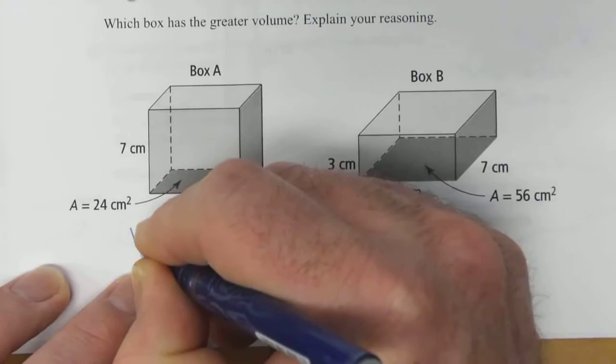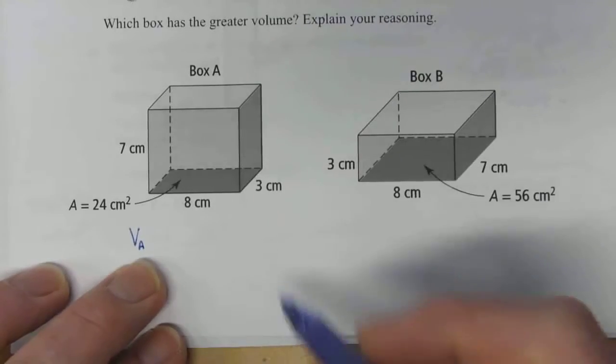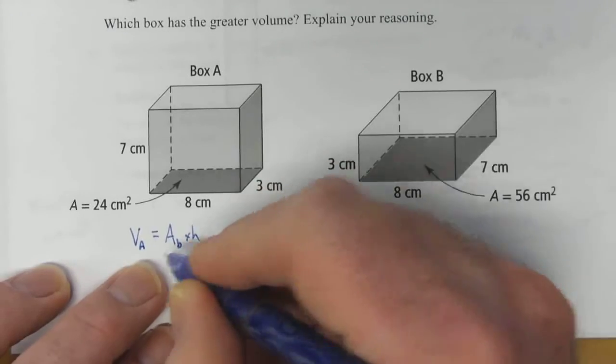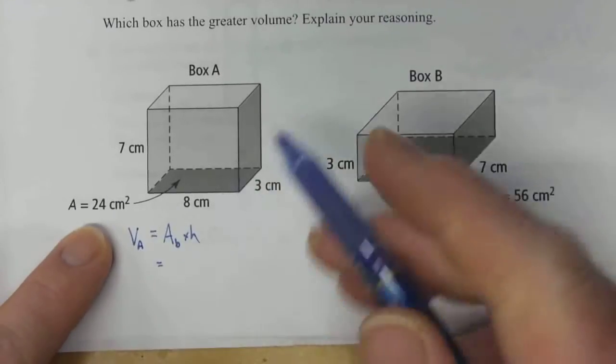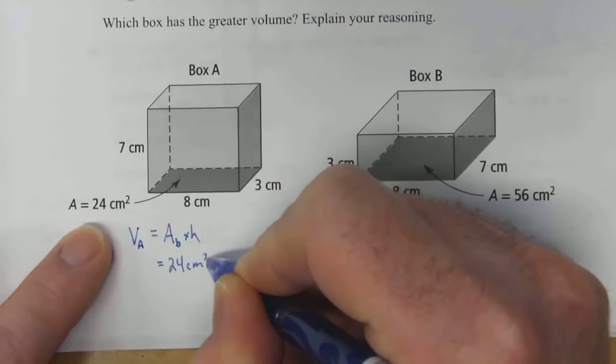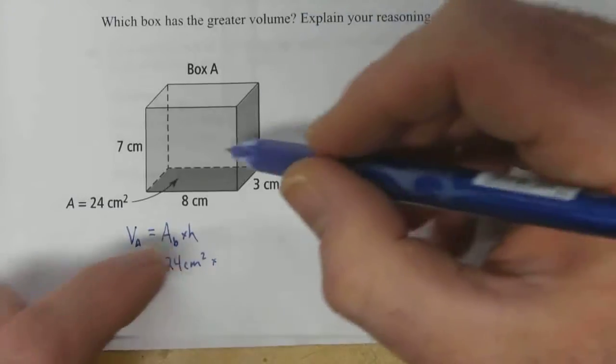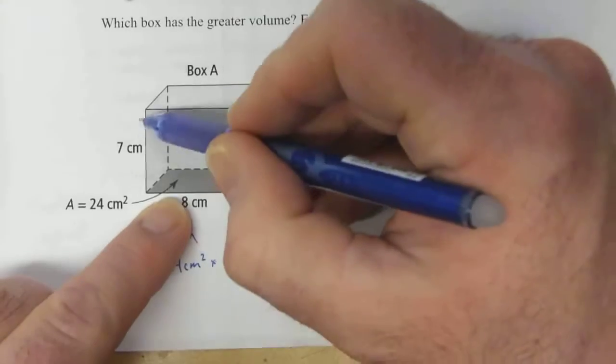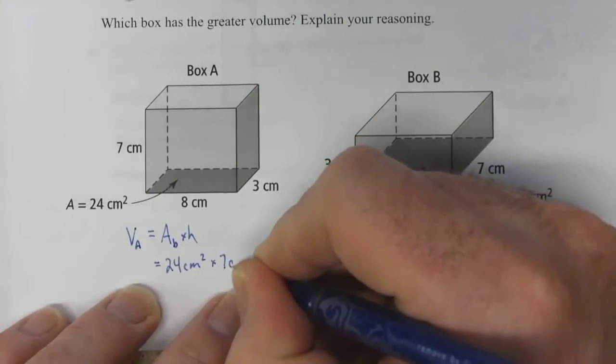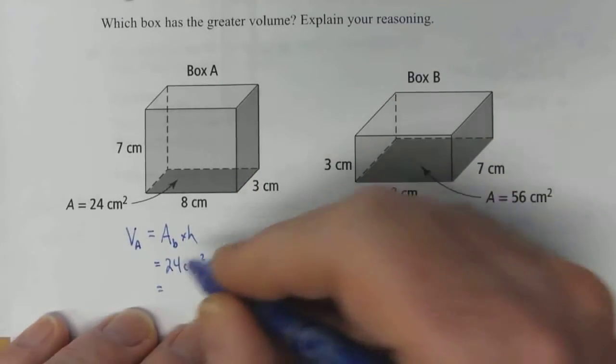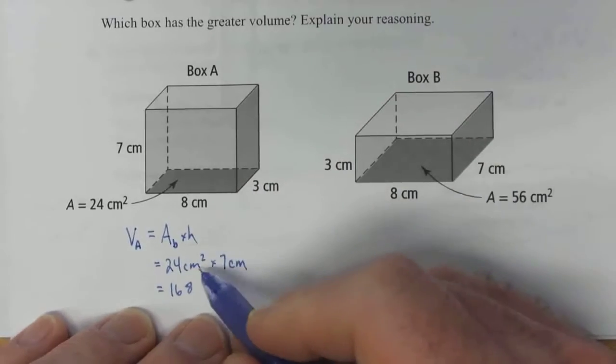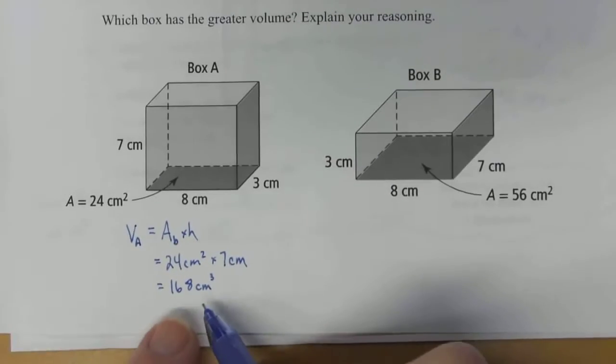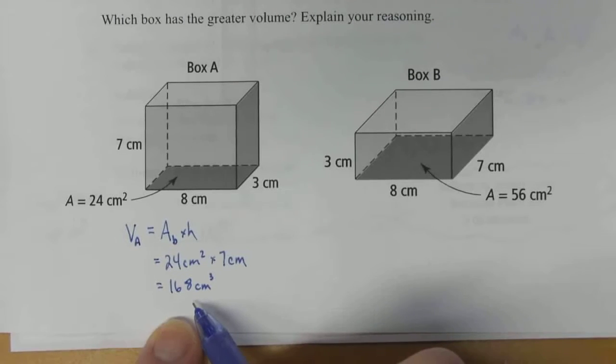So the volume for box A is equal to the area of its base times its height. The area of its base is 24 centimeters squared, and its height, if we're using this as its base, then the distance between its opposite faces is this 7 centimeters. So 24 times 7 is 168 centimeters cubed. We have a volume of 168 centimeters cubed for box A.